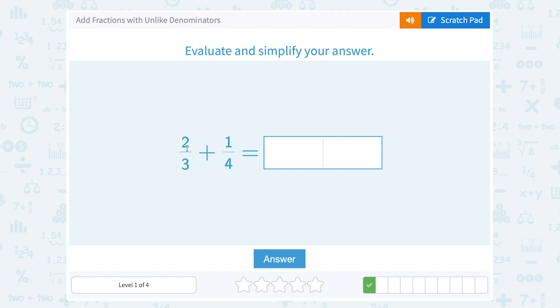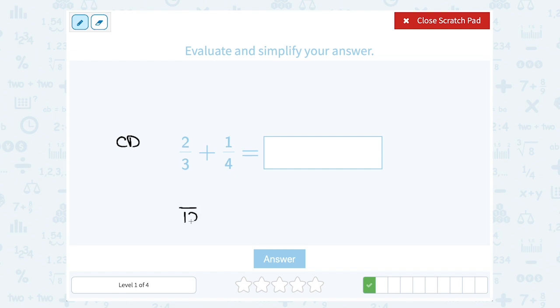This time we have 2/3 plus 1/4. Now these happen to be the same denominators or bottom numbers we had before. So remember we said we could multiply 3 times 4 to get a common denominator or same bottom number of 12.